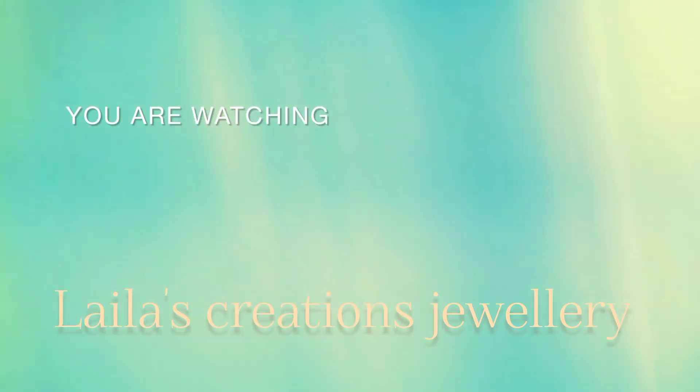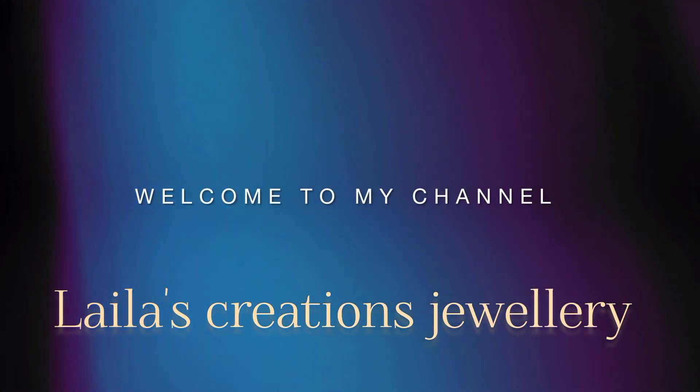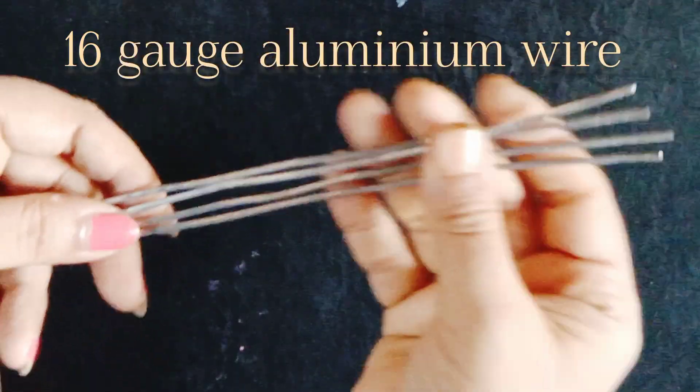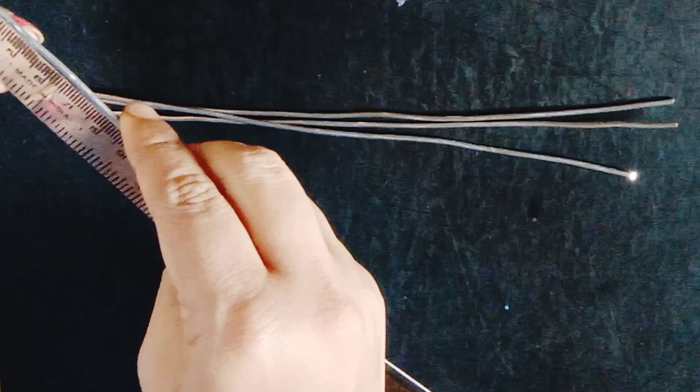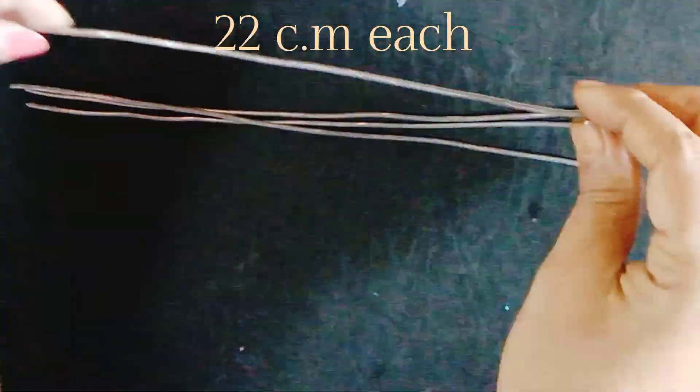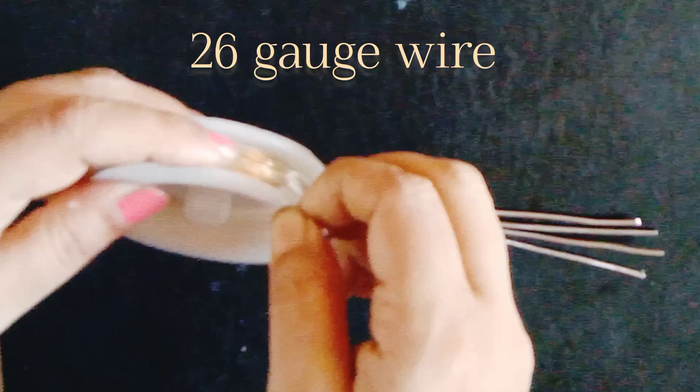Hello friends, welcome to Laila's Creations Jewelry. This is a bracelet making tutorial with aluminum wire of 16 gauge. I cut four wires 22 cm each.